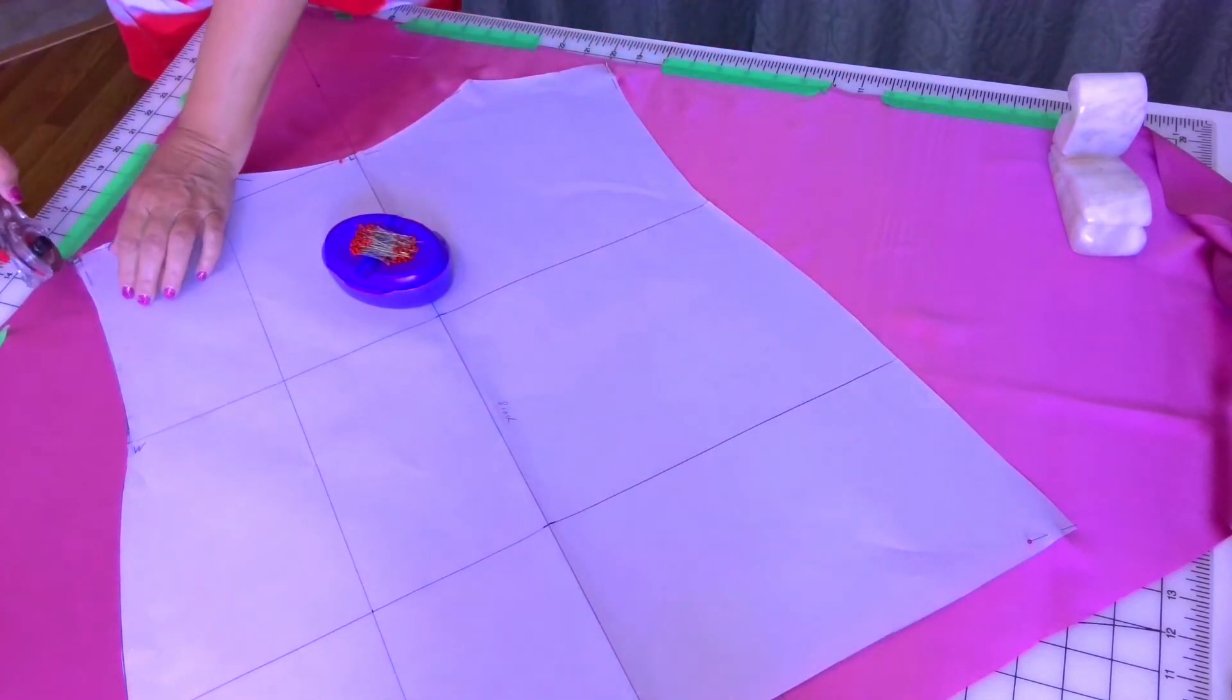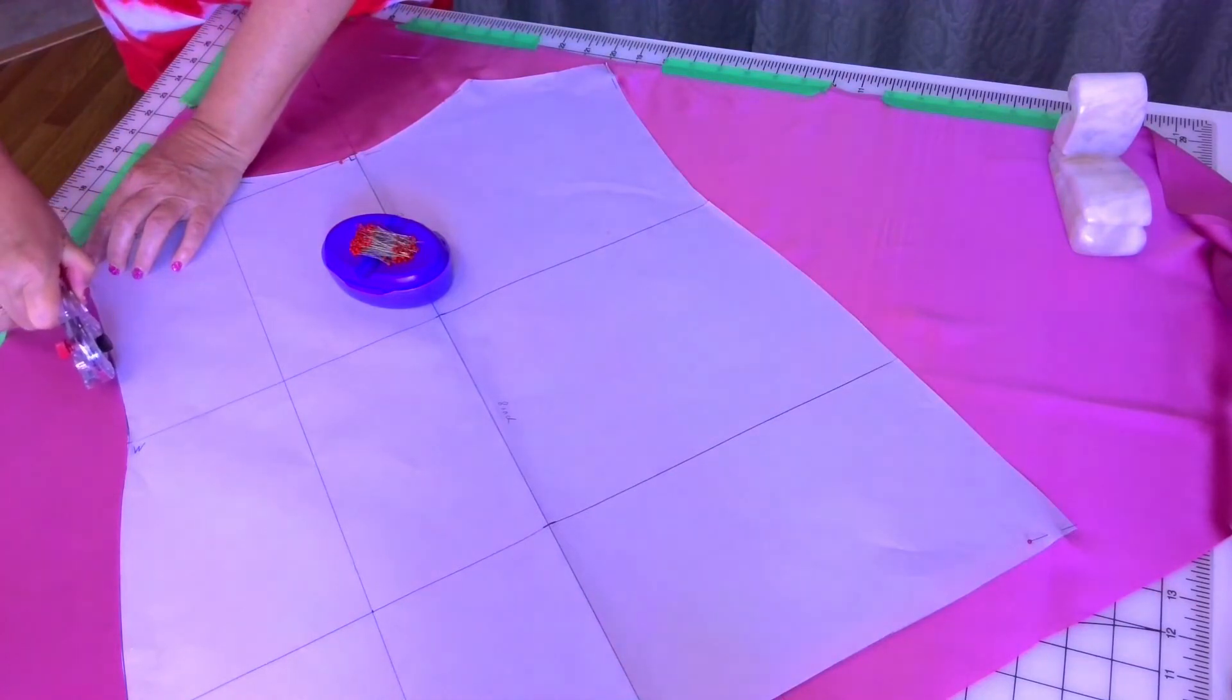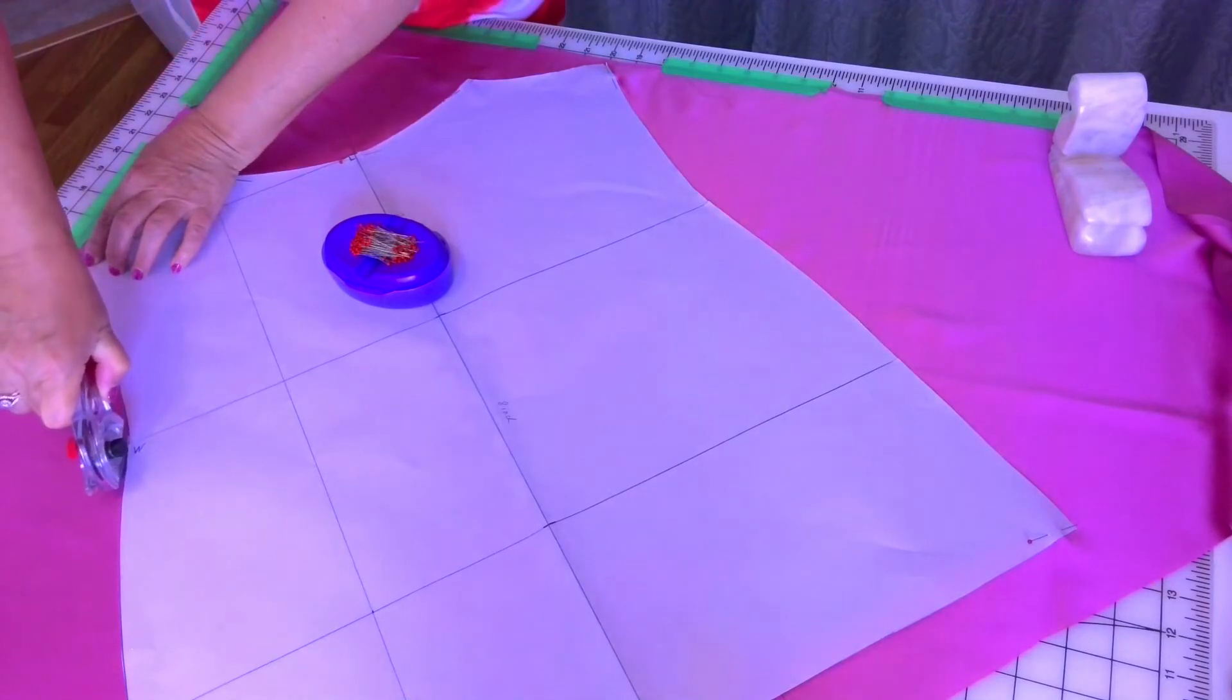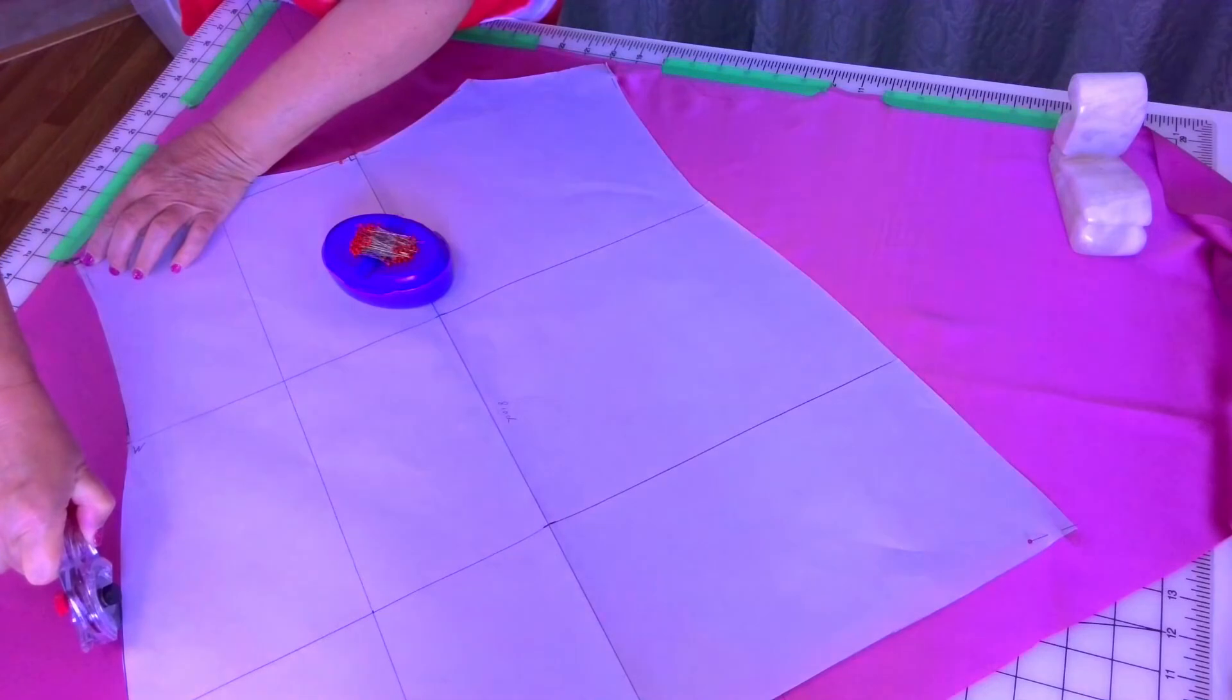However, if you don't own a rotary cutter you can cut your fabric with scissors. Simply cut around the pattern edges. Just take care not to lift your fabric too much when cutting as this can cause the fabric to stretch.